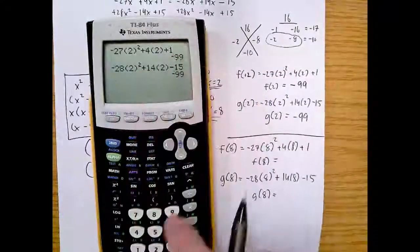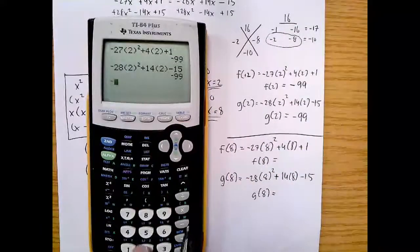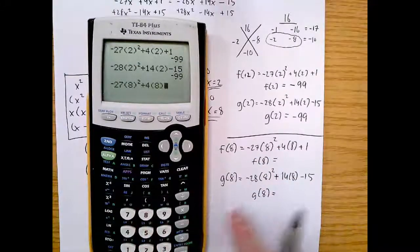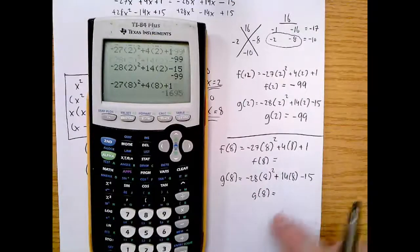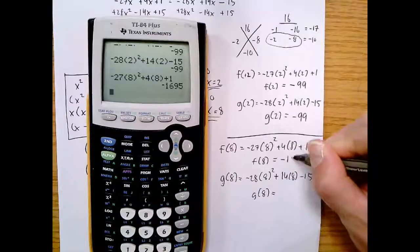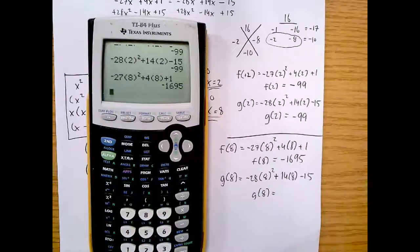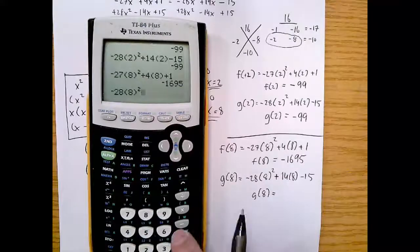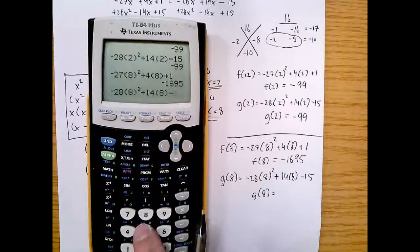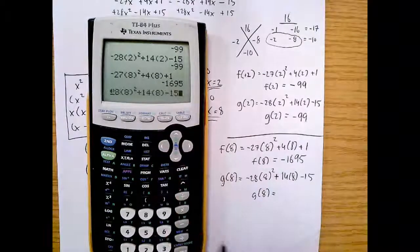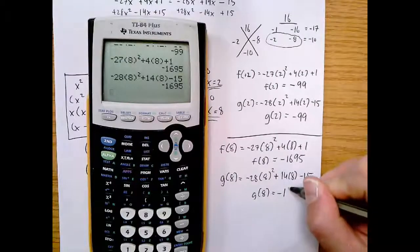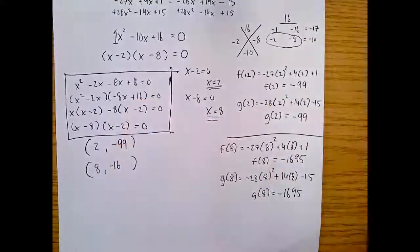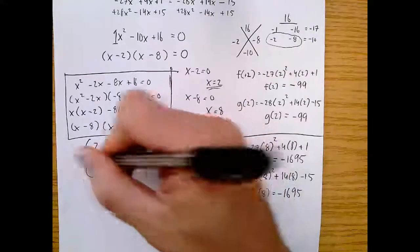Okay, so again, let me just put these in the calculator. Now you could just scroll up and try to replace your numbers, but I'll just type them in. So -27(8²) + 4(8). Just copying what I wrote. And I hit 1 and hit enter. Whoa! -1,695. Okay, so hopefully I'll get -1,695. Here we go. -28(8²) + 14(8) - 15. That's -5 - 15. Here we go. Ha-ha! Look at that. That is a good feeling. I was a bit nervous. So our second intersection, point of intersection, is at -1,695. And there you go. Those are your answers.